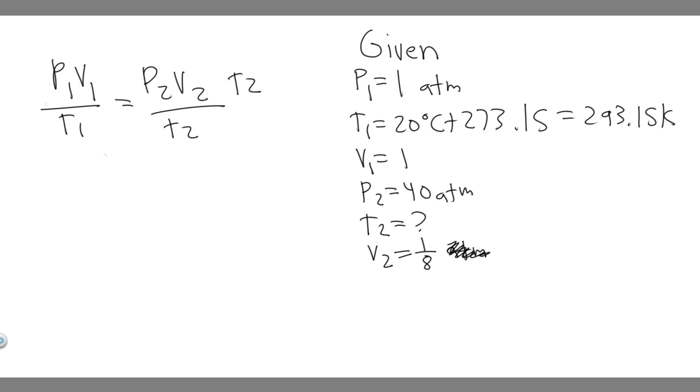So to solve for T2, you're just going to multiply both sides by T2. And so then you'll get T2 P1 V1 over T1 equals P2 V2. Then you can multiply both sides by T1, and then you're going to divide by P1 V1. And the way you want to write it is you want to have the one out front, so T1, and then you want to set them over each other. So it's going to be times P2 over P1, and then V2 over V1.